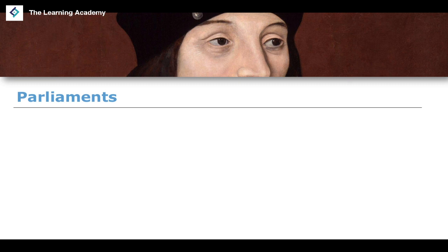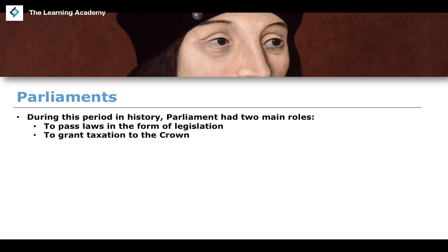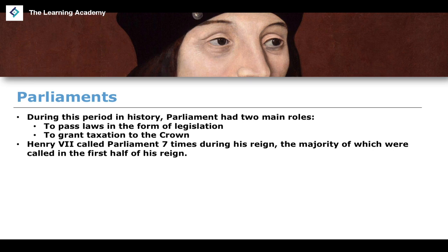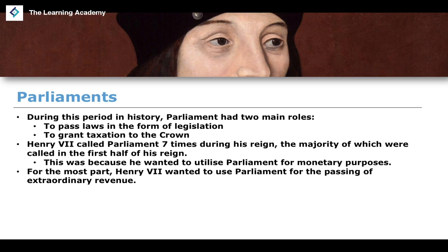When it comes to the parliaments of Henry the Seventh, parliament had two main roles during this period: to pass laws in the form of legislation, and to grant taxation to the crown to allow for the raising of revenue. These functions wouldn't change significantly until the Stuart period. Henry called his parliament seven times during his reign, the majority in the first half, primarily to raise revenue through taxation and to pass what is called extraordinary revenue.